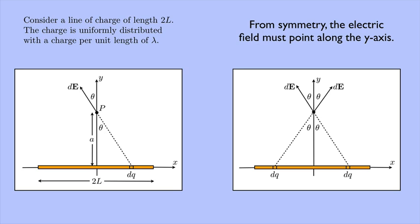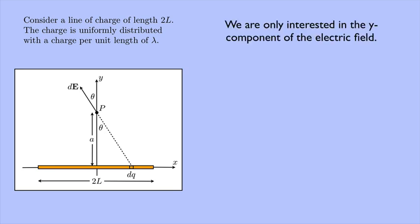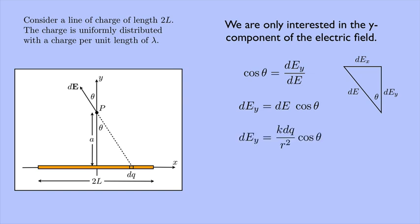From symmetry, the electric field must point along the y-axis only. So since I'm only interested in the y component of the electric field, I can make a triangle here. dE will be the hypotenuse. And then I can break that into components, dEx and dEy. And then this is my angle θ. I'm making a triangle with the y-axis here. So cosine of θ must be the y component over dE. And so the y component is dE cosine θ. Great. So that means that dEy is k dq over r² cosine θ.